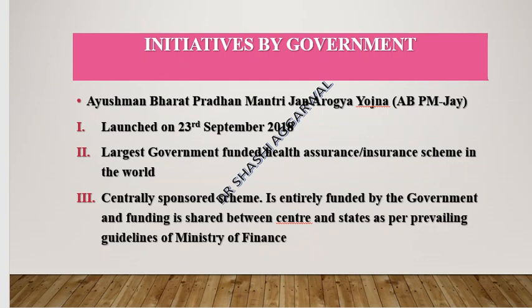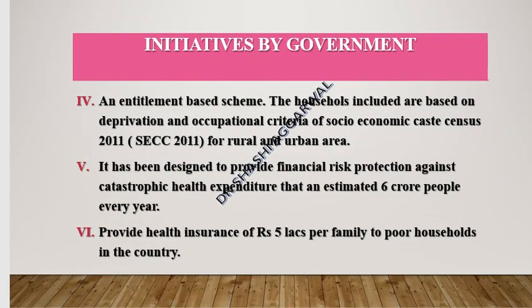Ayushman Bharat Pradhan Mantri Jan Arogya Yojana was launched on 23rd September 2018. This scheme is the largest government-funded health insurance scheme in the country, centrally sponsored with funding shared between the center and states as per Ministry of Finance guidelines. Benefits are on an entitlement basis — households are identified using deprivation and occupation criteria from the Socio-Economic Caste Census 2011 for rural and urban areas. It provides health insurance coverage of Rs. 5 lakh per family to poor households.